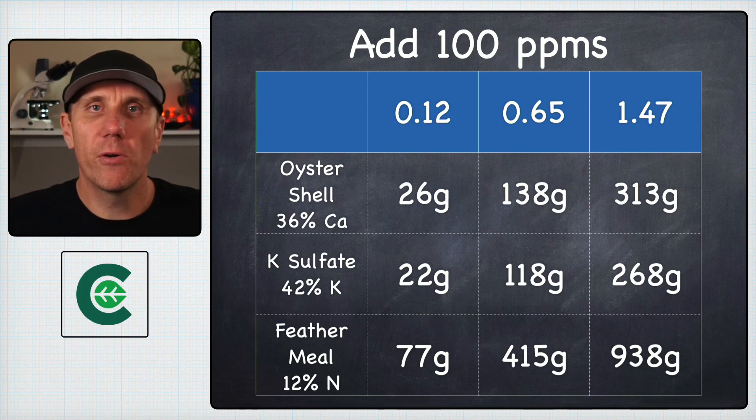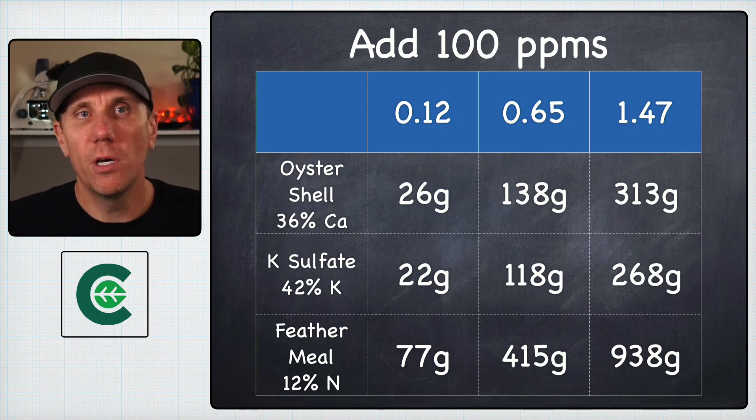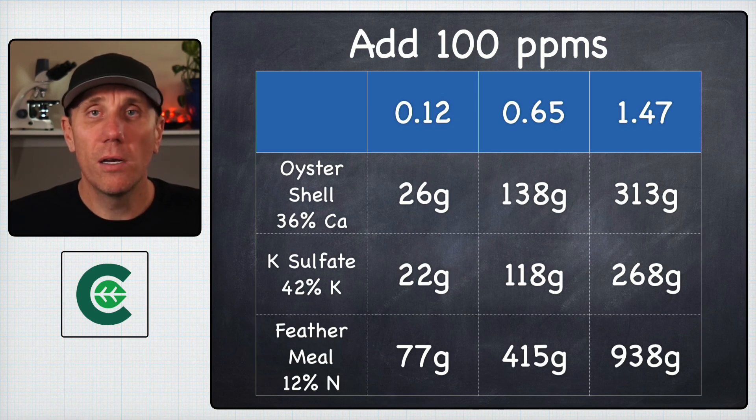If we want to increase calcium using oyster shell that's 36% calcium, it's going to take 26 grams of oyster shell for the lightest weight soil on up to 313 grams for that heaviest native soil that they're making the assumption on. You can see pretty clearly this is going to be a significant problem.